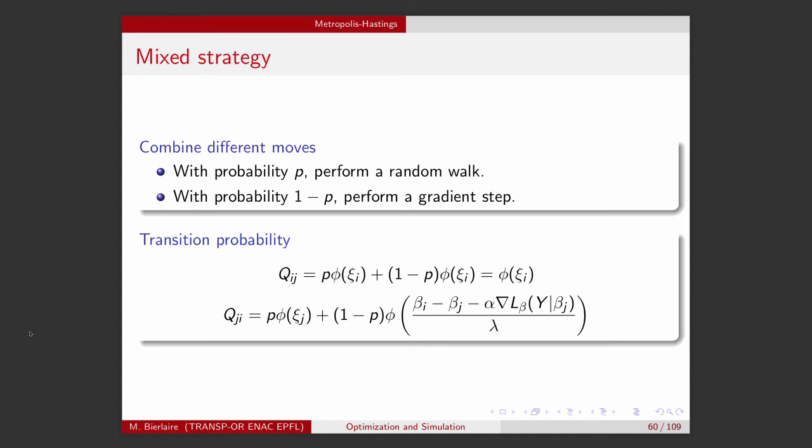I can say with probability p, I perform a random walk. And with probability 1 minus p, I perform a gradient step at each iteration.